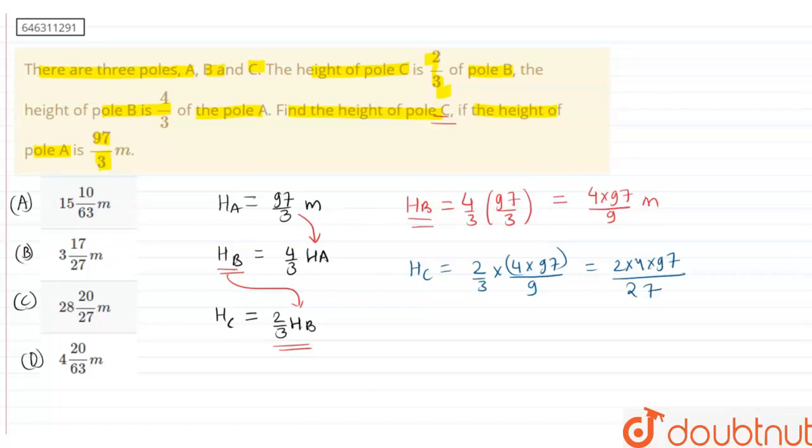If you see in the options, there are basically 2 options with denominator 27, that are B and C. Now we have to find the numerator. Let us solve: that is 8 times 97 divided by 27.